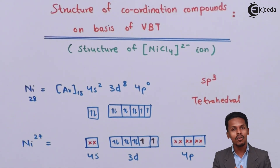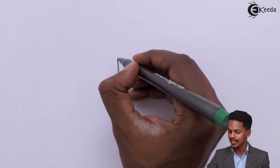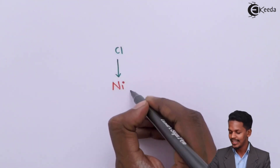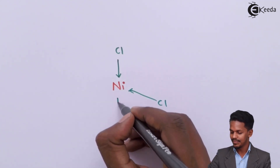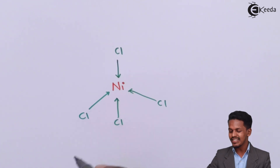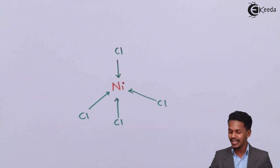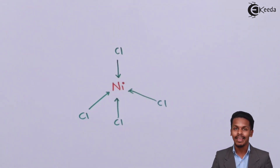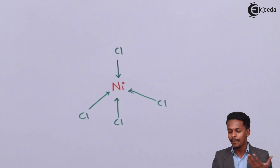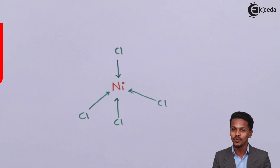To draw the structure: nickel is present in the center, and the 4 Cl atoms approach it while sharing lone pairs of electrons, forming a tetrahedral geometry. Two Cl atoms lie on the plane while the other two are above and below the plane, giving a bond angle of approximately 109°28'. This angle also depends on the hybridization and the ligands approaching.